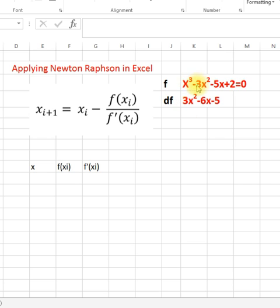Suppose we have to solve this equation x³-3x²-5x+2=0. So if you recall Newton-Raphson method, this is the equation for Newton-Raphson.